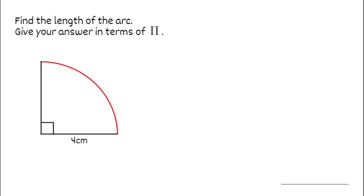For this next question we're going to find the arc length again, giving it in terms of pi. Because we've got a right angle and we know that's 90 degrees, our whole circle would be 360 degrees, so the arc length would actually be a quarter of the whole circumference. I'm still going to use the formula for circumference, which is pi times the diameter, but this time because I've only got a quarter of the circle, I'd have to divide the circumference by 4.